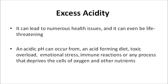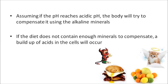The most common form of pH imbalance is excess acidity. It can lead to numerous health issues, and it can even be life-threatening. An acidic pH can occur from an acid-forming diet, toxic overload, emotional stress, immune reactions, or any process that deprives the cells of oxygen and other nutrients. If the pH reaches acidic levels, the body will try to compensate using the alkaline minerals. If the diet doesn't contain enough minerals to compensate, a buildup of acids in the cells will occur.